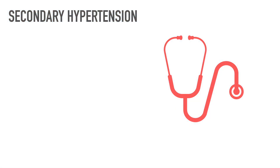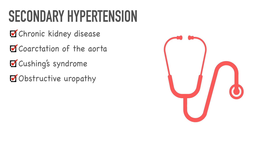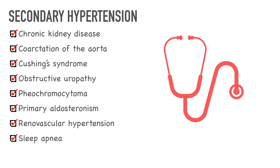Secondary hypertension can be produced by chronic kidney disease, coarctation of the aorta, Cushing's syndrome, obstructive uropathy, pheochromocytoma, primary aldosteronism, renovascular hypertension, sleep apnea, and thyroid or parathyroid disease. These are just some of the possible causes of secondary hypertension.